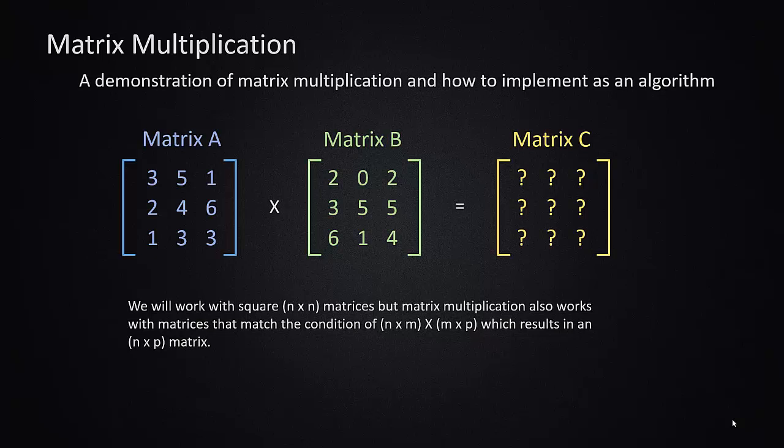But in general matrix multiplication works with any combination of matrices where you have a pattern where there's an n by m multiplied by an m by p would result in an n by p. In other words the number of columns in the first matrix has to equal the number of rows in the second matrix, and this will allow for a legitimate multiplication.